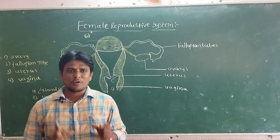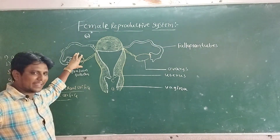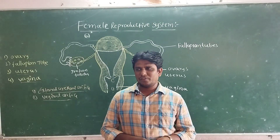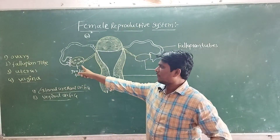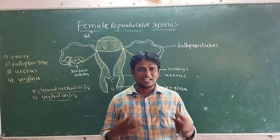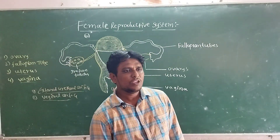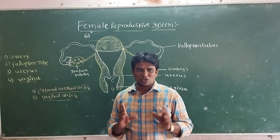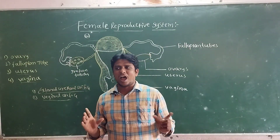What are the functions of ovaries? Ovaries have two functions. First, they release the female gamete. Second, ovaries produce female sex hormones — Estrogen and Progesterone. Estrogen develops the secondary sexual characters, and Progesterone helps in the implantation in the uterus.